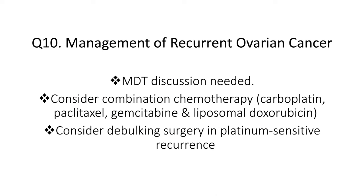Final question: How do you manage a patient with recurrent ovarian cancer? This is a difficult situation with considerable controversy. The usual treatment is combination chemotherapy with drugs such as carboplatin, paclitaxel, gemcitabine, and liposomal doxorubicin. Debulking surgery may be of benefit in platinum-sensitive recurrence, but the evidence is uncertain. Given the complexity, an MDT discussion is necessary to work through the options.